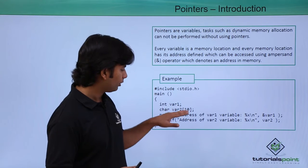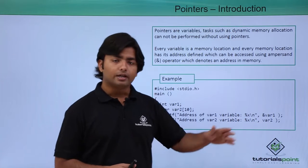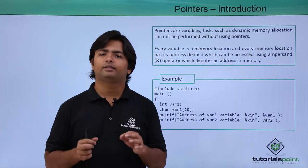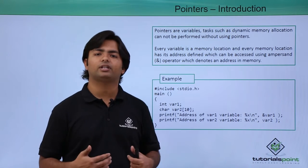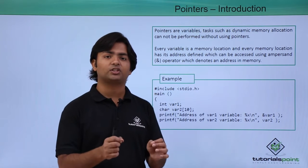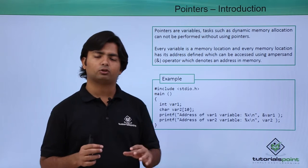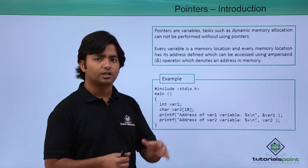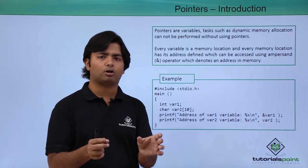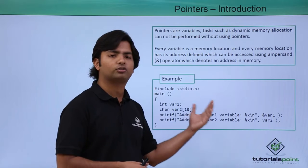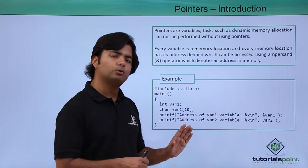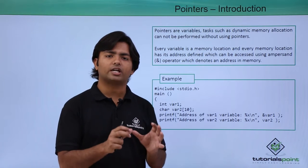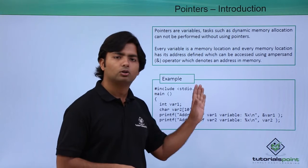For the second variable var2, notice that we have not put the ampersand symbol before it. That is because var2 is the name of an array, and the name of an array is itself a constant pointer which stores the address of the 0th index block — the base location, meaning where the array starts. For example, in a character array where each character takes one byte, if the base address is 20 then the next blocks will be 21, 22, 23. So the name of an array is always a constant pointer storing the base address.